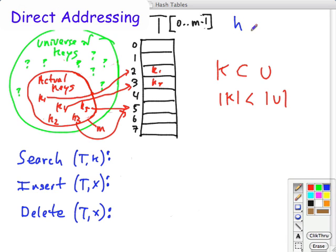h takes a key, and then it produces something in zero to m minus one. It produces a position in the hash table. So h has to take as its input domain. It goes from the universe of keys to the set of possible keys in the table.